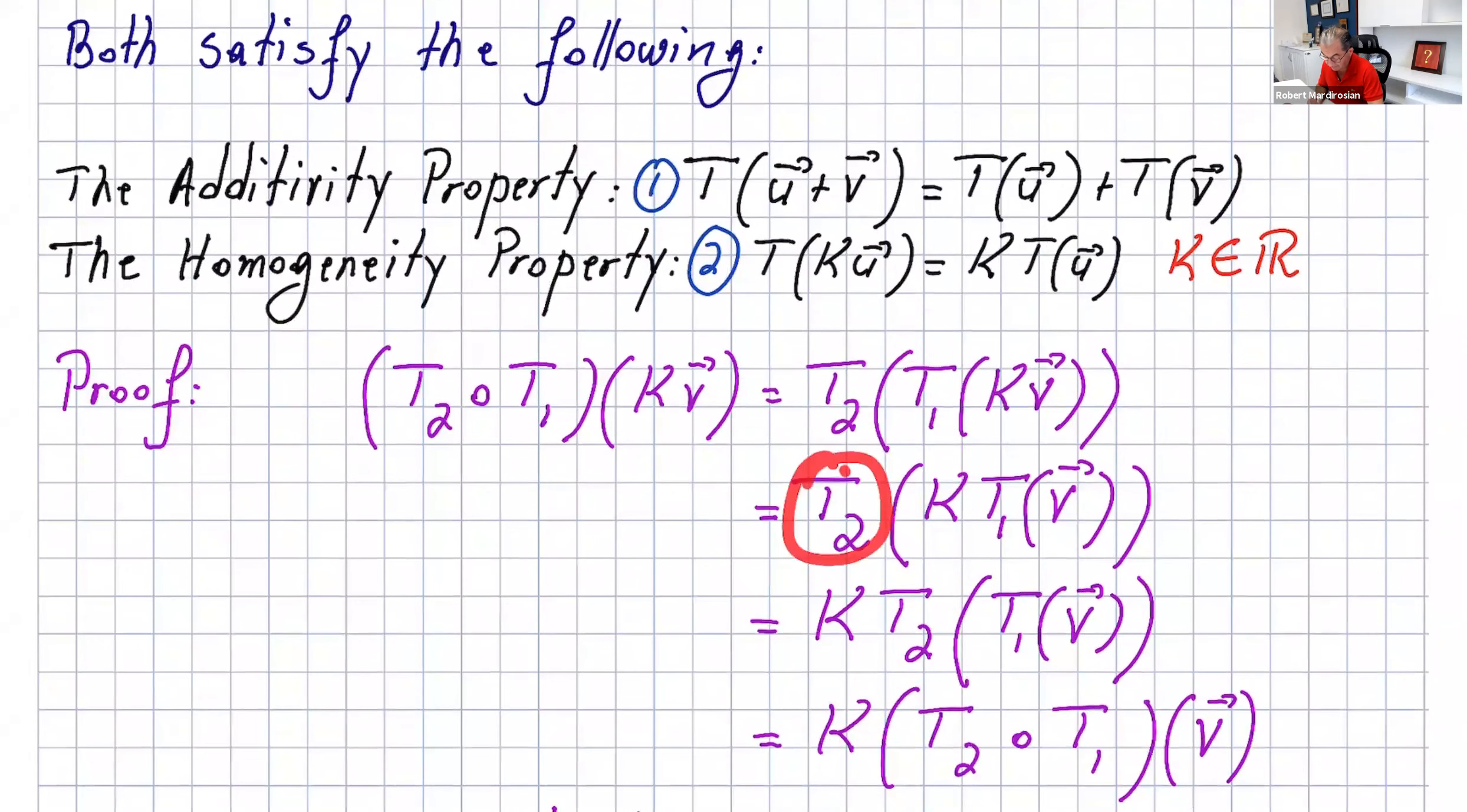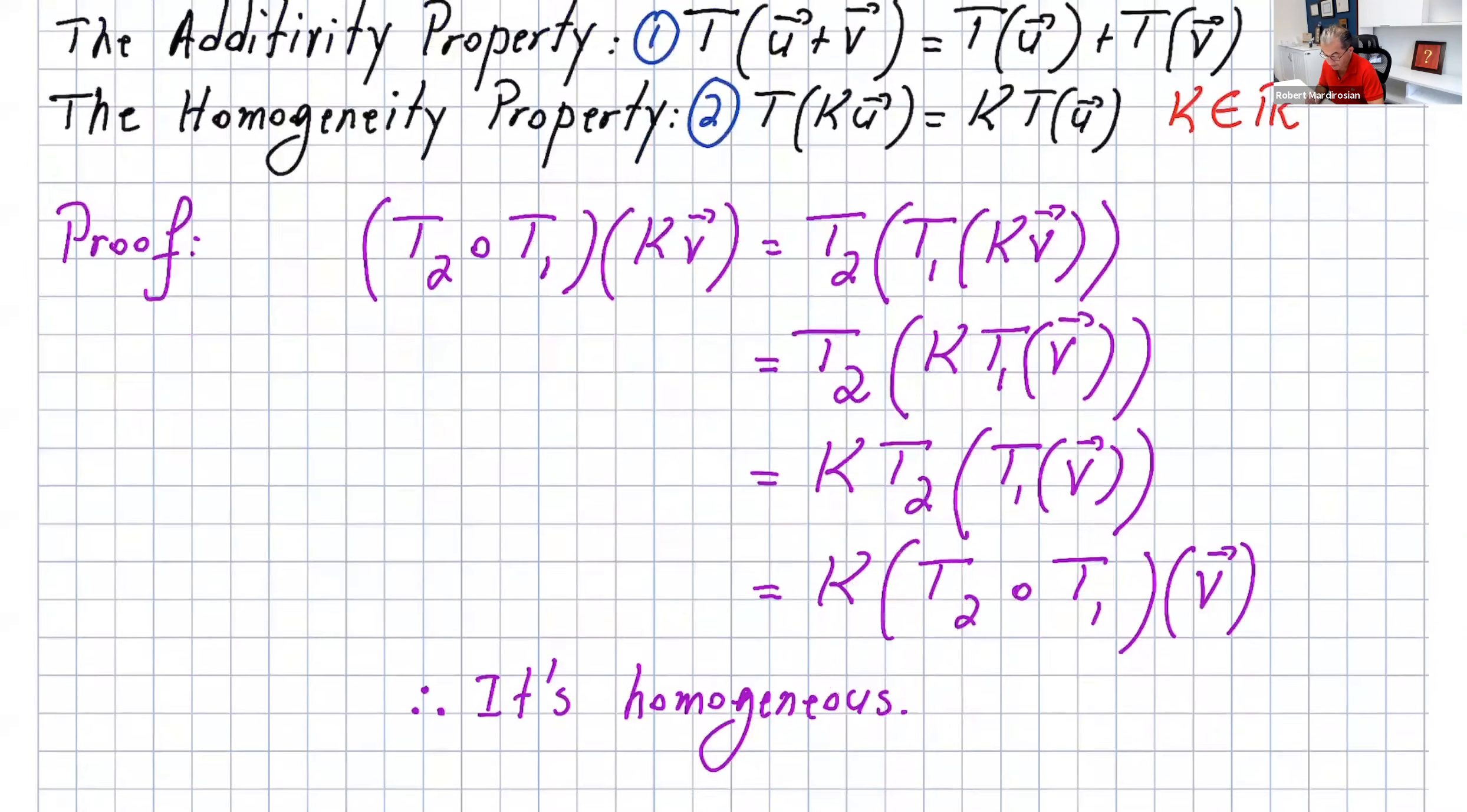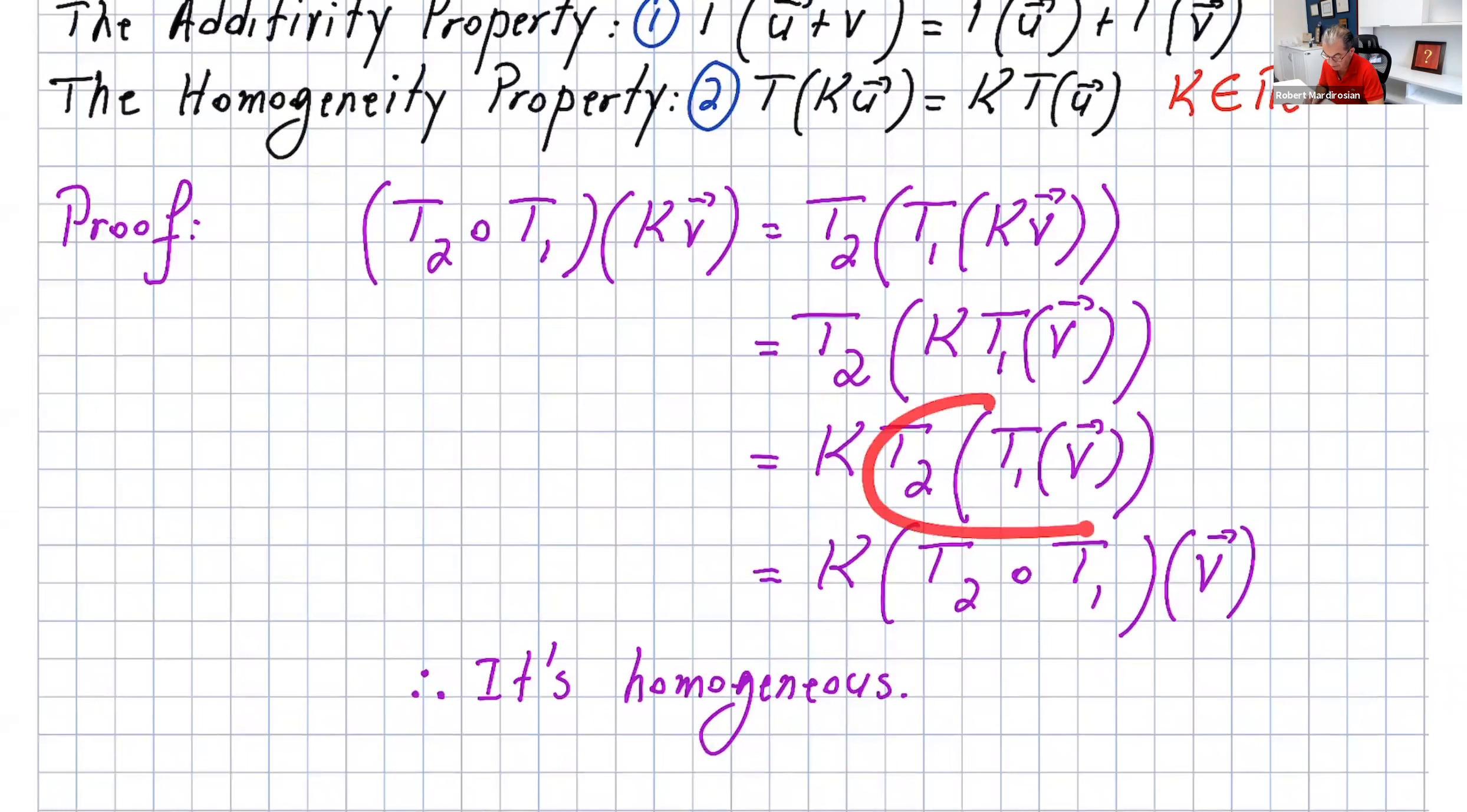But again, T₂ itself is a linear transformation, and that's just a vector, so we can just take that k out and put that as k·T₂(T₁(v)). And when you write that now, you can change that to k(T₂∘T₁)(v).